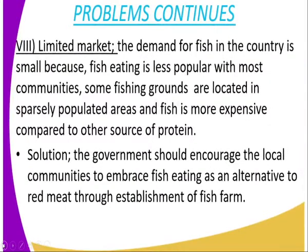Number eight is limited market. The demand for fish in the country is small because fish eating is less popular with most communities. Some fishing grounds are located in sparsely populated areas, and fish is more expensive compared to other sources of protein. The solution is that the government should encourage local communities to embrace fish eating as an alternative to red meat, and also establish fish farms.